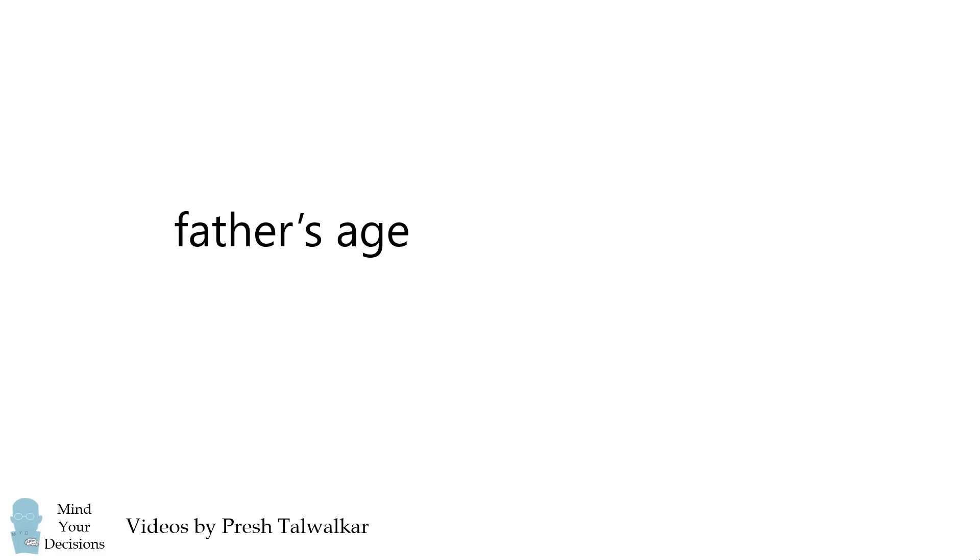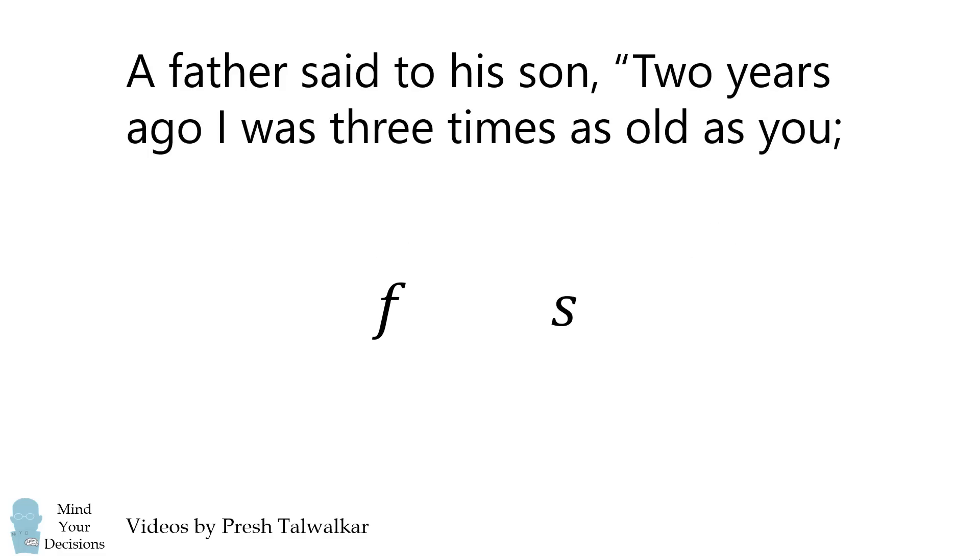Suppose the father's age is F and the son's age is S. The father says that two years ago, I was three times as old as you. Two years ago, their ages would be F-2 and S-2.